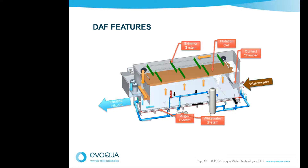Once the solids have settled and the solids have floated — hopefully more floating than settling — there has to be a means of separating the clarified effluent from those solids. There is a baffle system within the DAF that carries the flow around through an effluent weir system for discharge of the clarified effluent, either for direct discharge or further treatment downstream.